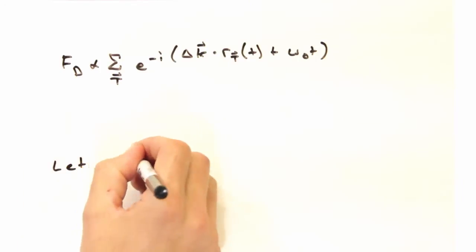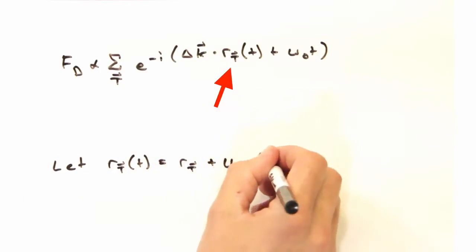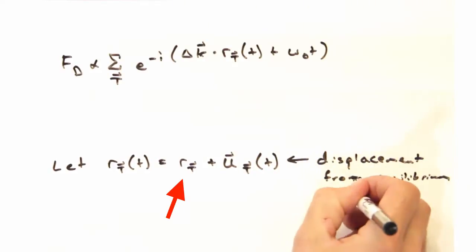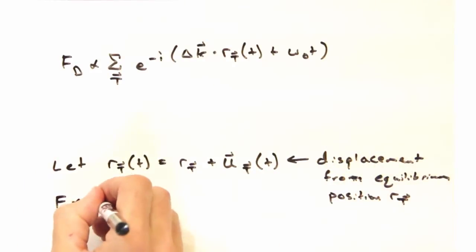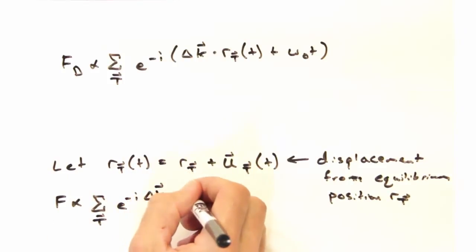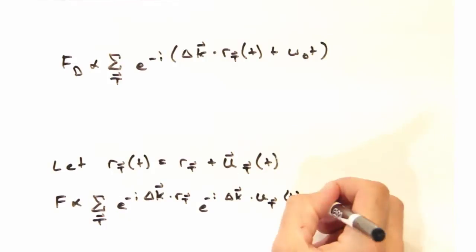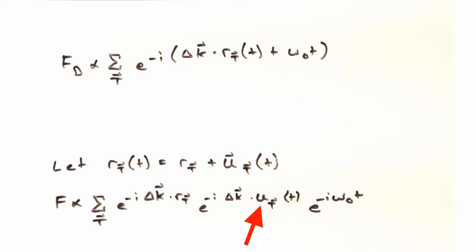The first trick we can play is to take this time-dependent r and separate it into the original lattice position, just simply r of t, and then a displacement off of that, u, which should sound pretty familiar from phonons. In that case, we can recast the scattering density in the following way, where we separate out this r_t term and then a displacement off of r in this other exponential here.